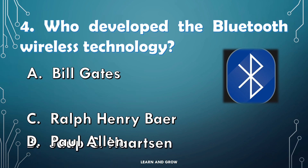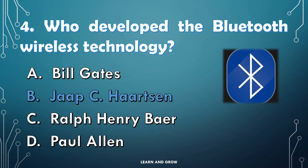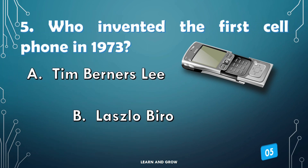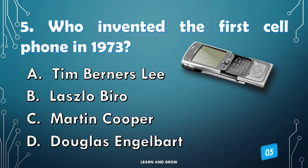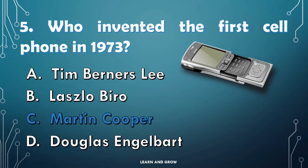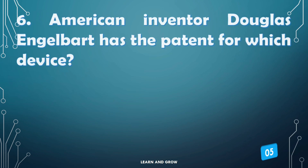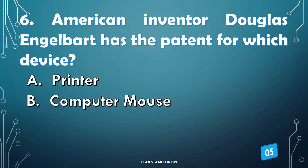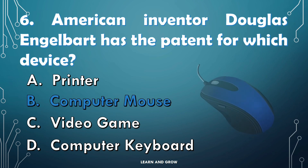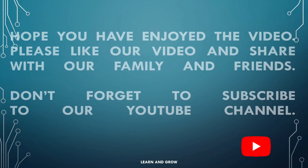Who developed the Bluetooth wireless technology? The Bluetooth wireless technology was developed by Jaap Haartsen. Who invented the first cell phone in 1973? The answer is Martin Cooper. American inventor Douglas Engelbart has a patent for which device? Option B: the computer mouse.